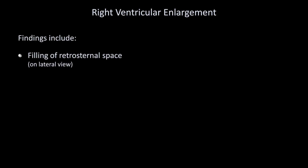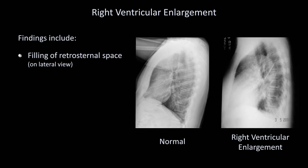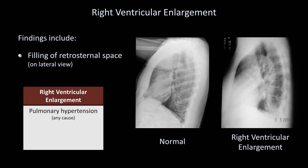The second cardiac chamber whose enlargement can sometimes be individually spotted on x-ray is the right ventricle. The main finding is filling of the retrosternal space as seen on the lateral view. Consider these two lateral films — I have included a normal one for comparison. Examine the retrosternal space directly behind the sternum in the mid-chest region. In the normal film, this will be relatively lucent. However, as the right ventricle is the most anterior of the cardiac chambers, as it enlarges it begins to occupy this space. Etiologies of right ventricular enlargement include any cause of pulmonary hypertension and pulmonary valve disease.